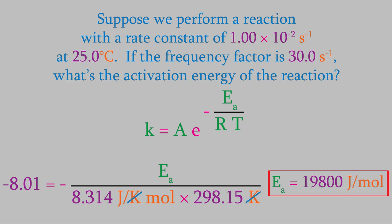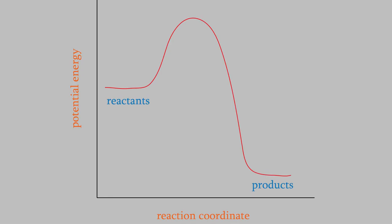So, our activation energy is 19,800 joules per mole. That tells us that, in order for this reaction to happen, the reactant molecules must collide hard enough that 19,800 joules per mole of kinetic energy can be converted into potential energy.